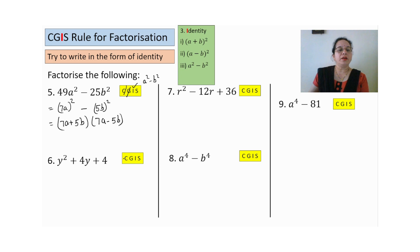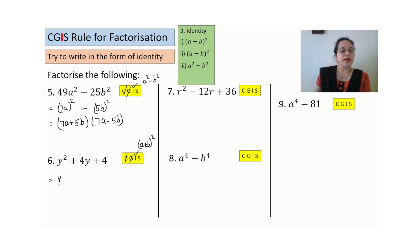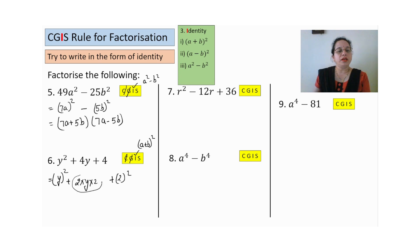Sixth sum — common not possible, grouping not possible, we go for identity. Three terms, all positive, so we use (a+b)². Write the last term 4 as 2², and the middle term should be 2 × y × 2 = 4y. Check — you are getting 4y, same. So the identity is (y+2)².